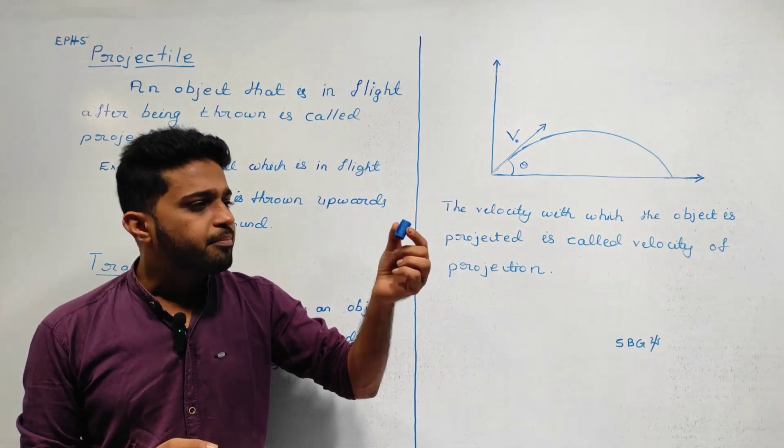Now we have to substitute into this equation. Let s equal y. So y equals V0 sin theta multiplied by t, and t equals x divided by V0 cos theta. Substituting, u equals V0 sin theta, and the bracket t equals x divided by V0 cos theta.